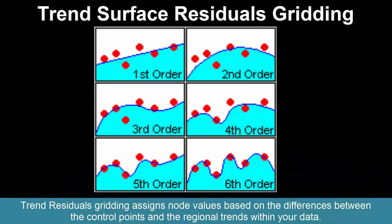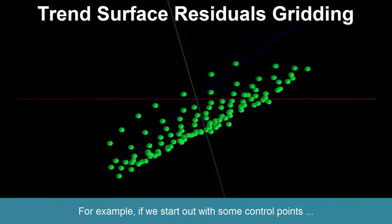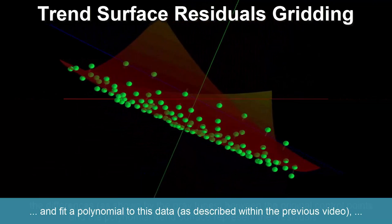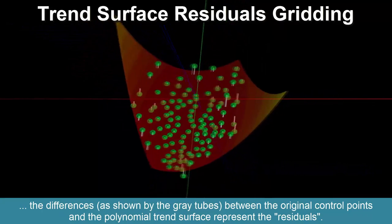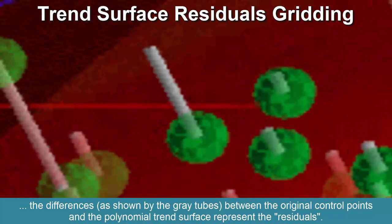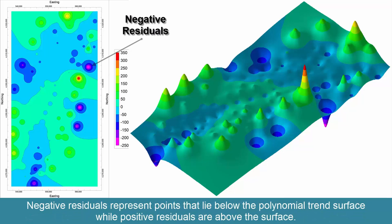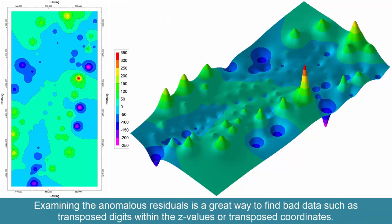Trend residuals gridding assigns node values based on the differences between the control points and the regional trends within your data. For example, if we start out with some control points and fit a polynomial to this data, the differences — shown by the gray tubes between the original control points and the polynomial trend surface — represent the residuals. A contour map of these residuals using inverse distance weighting shows the extent to which these observed values differ from the polynomial trend surface. Negative residuals represent points that lie below the polynomial trend surface, while positive points are above the surface.